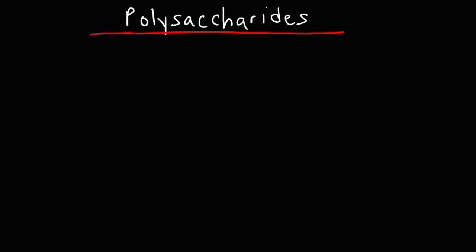In this video, we're going to talk about polysaccharides. If we think back, a monosaccharide is basically one sugar unit. A disaccharide has two sugar units or two monomers. A polysaccharide, the word poly means many, so it's made up of many sugar units or many monomers.